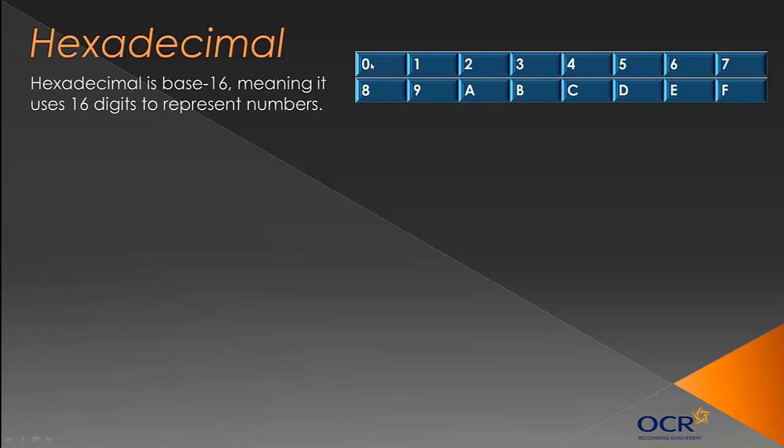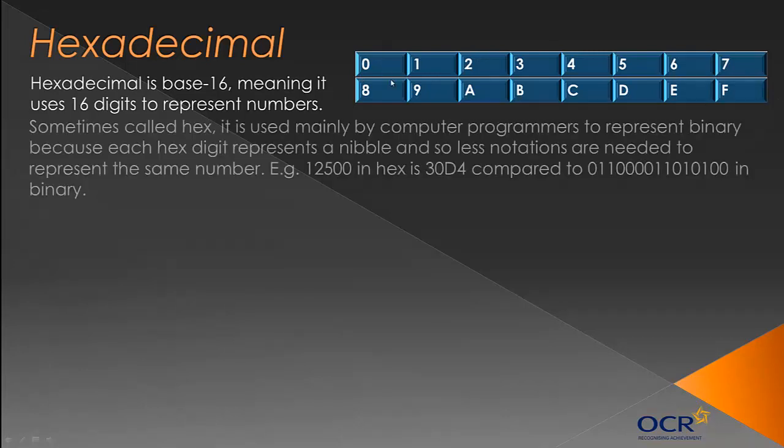When I first learned this, I completely forgot about zero and used G as the last one because I thought it went up to 16. Sometimes we call it hex because it's easier to say and write, and it's mainly used by computer programmers to represent binary numbers because each hex digit represents a nibble. One hex digit equals four binary bits, so less notations are needed to represent the same number. This huge binary number equal to 12,500 is far shorter in hex, and this difference gets exponential as numbers get longer.